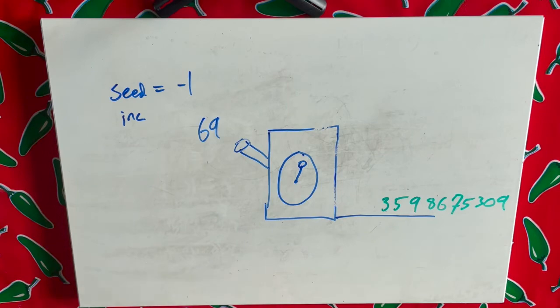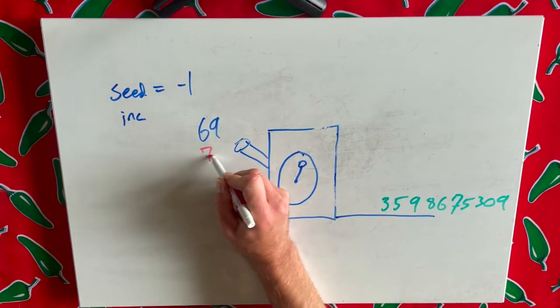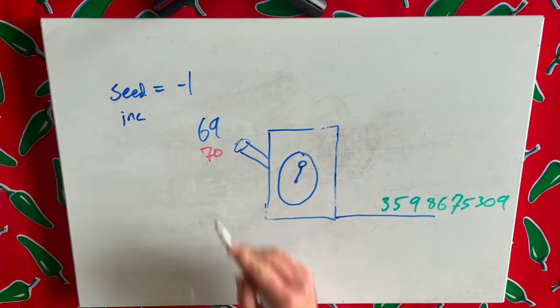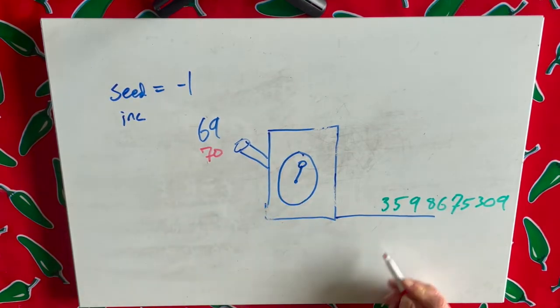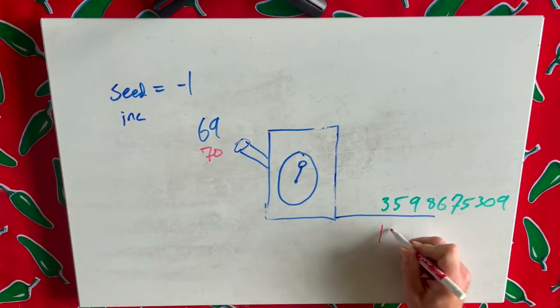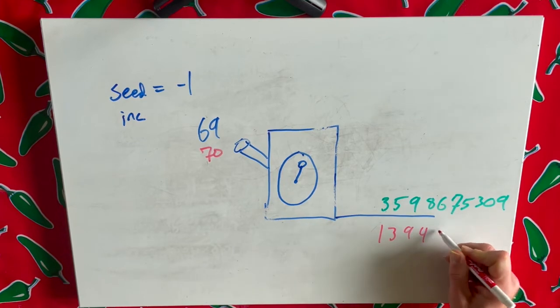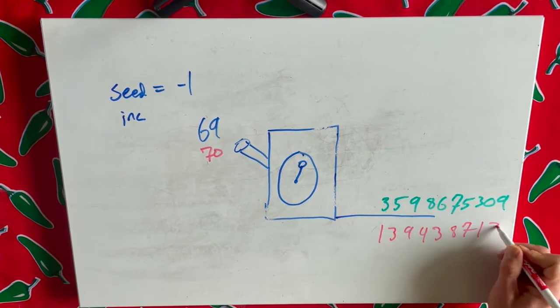But if we have a completely different number, let's say we step up to number 70, increment up, and plunk that in the machine. Then we would get 1, 3, 9, 4, 3, 8. I'm just trying to come up with numbers here.